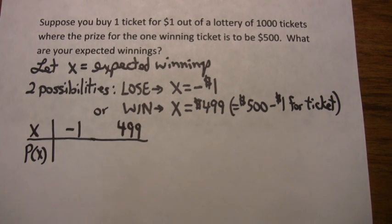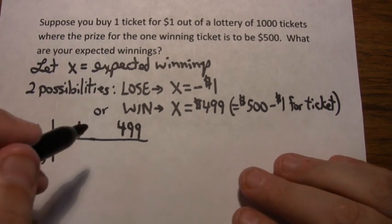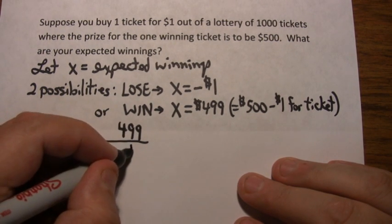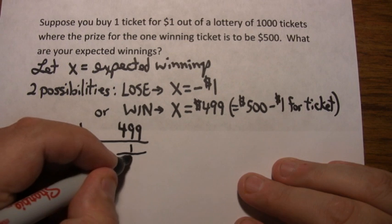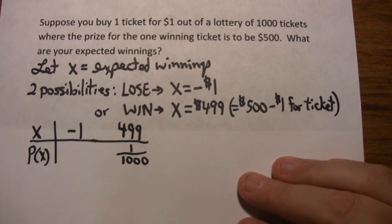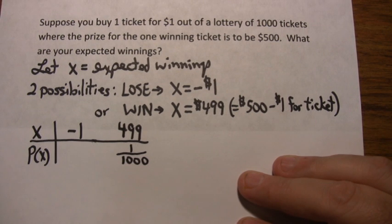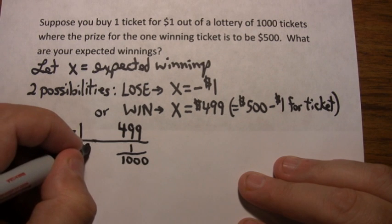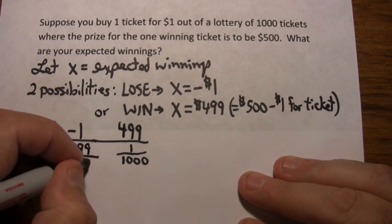But now, what's the probability of this happening? There's only one winning ticket. If you look at the winning first, there's only one ticket out of the thousand that would give you a win. So the probability of winning is 1 out of 1,000. The rest of the tickets are losers. So there's a 999 out of 1,000 chance you're going to lose.